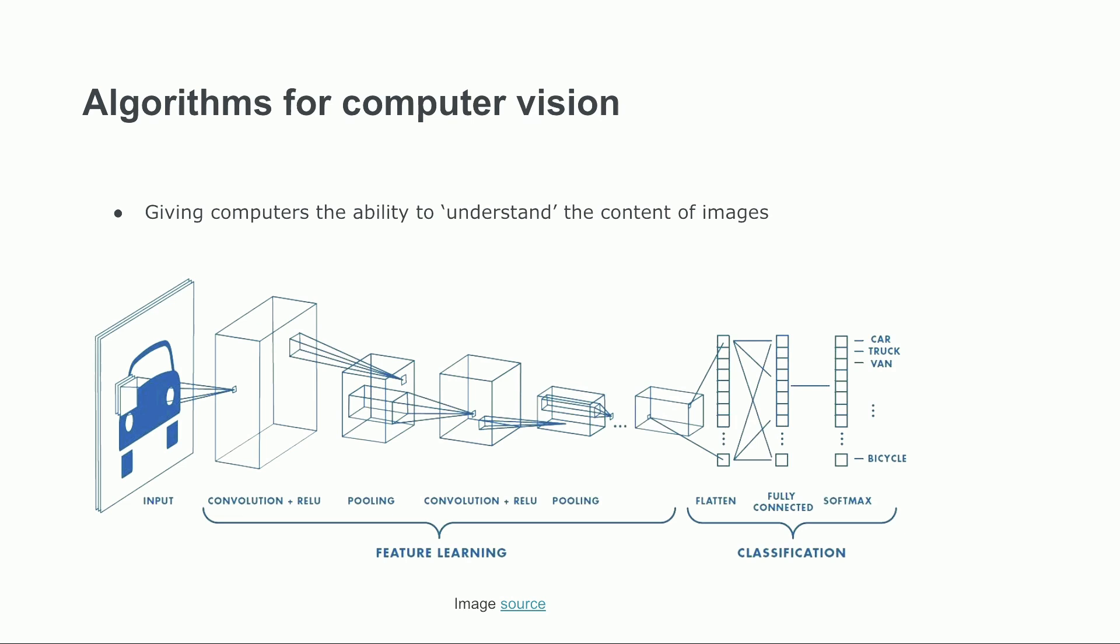So a brief definition of computer vision that I particularly like is giving computers the ability to understand the content of digital images. We do this using a variety of algorithms. In this illustration, we see the architecture of a convolutional neural network, which is a very powerful algorithm for assigning semantics to digital images.